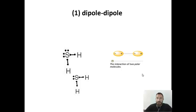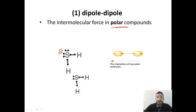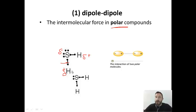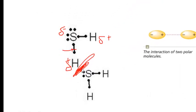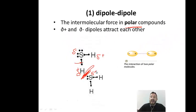The first type of intermolecular force is dipole-dipole. Dipole-dipole is the intermolecular force that exists in polar compounds. In these polar compounds there is a permanent partially negative side and a permanent partially positive side. I'll use dihydrogen sulfide as an example: the sulfur is partially negative and the hydrogens are partially positive. The force between the separate H₂S molecules — the red line drawn between them — is a dipole-dipole force, because the partial positive on the hydrogen is attracted to the partial negative on the adjacent sulfur.